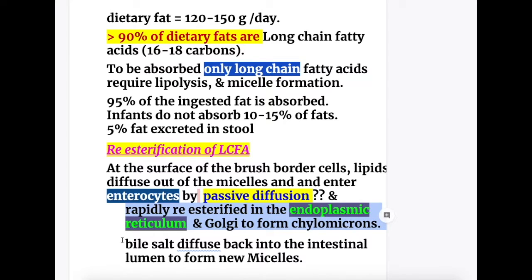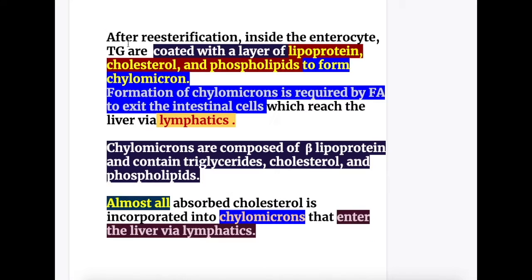The bile salts diffuse back into the intestinal lumen. The bile salts were coating the lipid when they were absorbed, but before absorption, the bile salts diffuse back into the lumen to form new micelles.